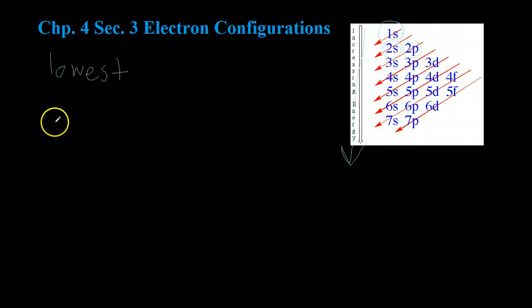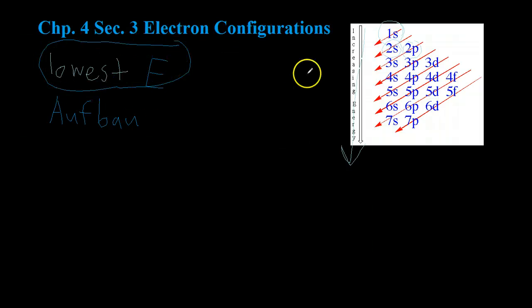So there are some rules that govern how electrons are configured in atoms. And the first is something called the Aufbau Principle. And what the Aufbau Principle basically says is that electrons will first occupy the lowest energy possible. So they follow this rule right here. And you can see that again on the diagram, where they start here at the low energy, and then gradually increase following these red arrows.